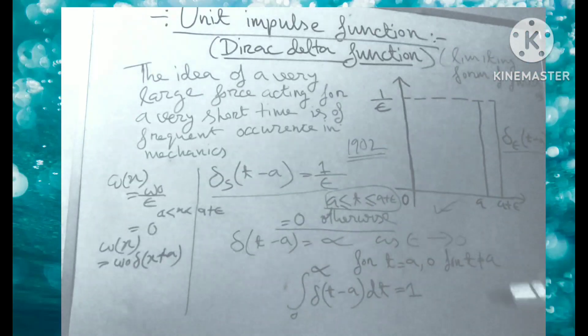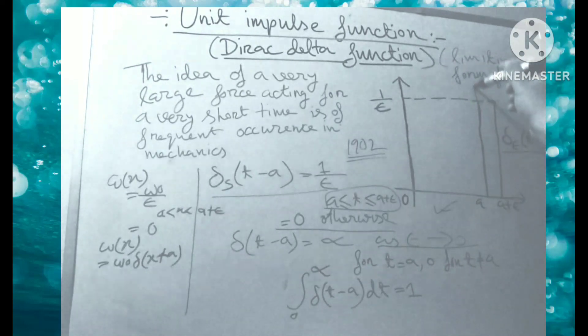As epsilon tends to zero, it is clear from the figure that as epsilon tends to zero, the height of the strip increases indefinitely, and the width decreases in such a way that its area is always unity.